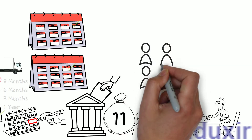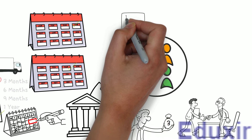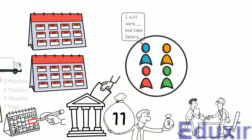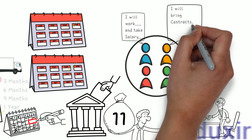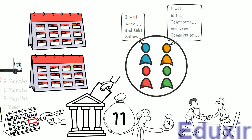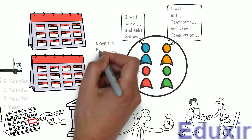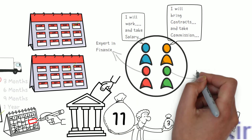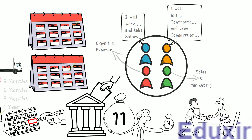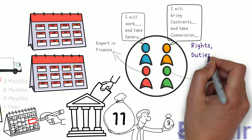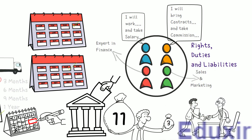Sometimes some partners might work for the firm. In such cases, their salaries should be specified in the partnership deed. Sometimes if any of the partners brings a contract or business for the firm, he might be paid a commission — either a lump sum or a percentage — and that should also be specified. Note that such payments are not mandatory; they should be specified only if they are payable to any partner. Since not all partners are experts in the same field — one might be an expert in finance, another in sales and marketing — the rights, duties, and liabilities of each partner should be documented in the partnership deed.